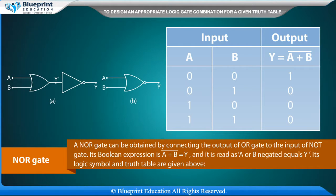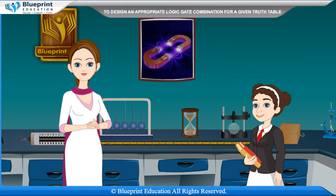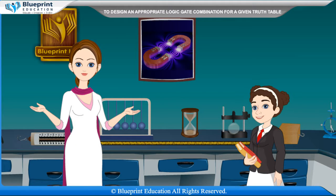Its logic symbol and truth table are given above. A NOR gate can be obtained by connecting the output of an OR gate to the input of a NOT gate. Its boolean expression is A plus B bar equals Y, and it is read as 'A or B negated equals Y'. Its logic symbol and truth table are given above.